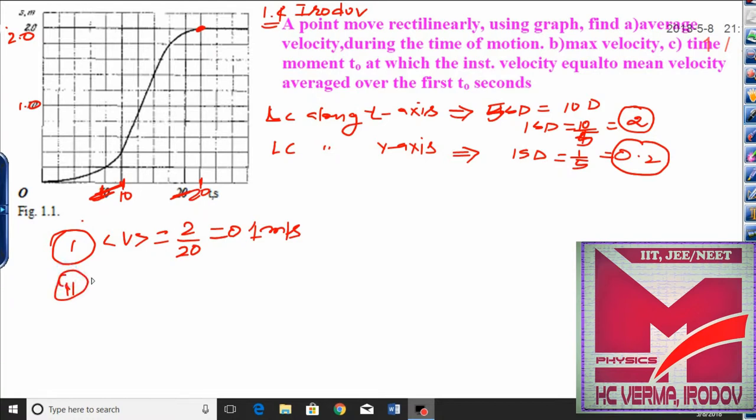Now the second part - maximum velocity. How would you calculate the maximum velocity? Maximum velocity means if slope is maximum, because this is a position-time graph. To get the maximum velocity I need maximum slope.